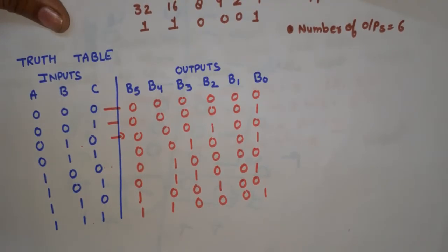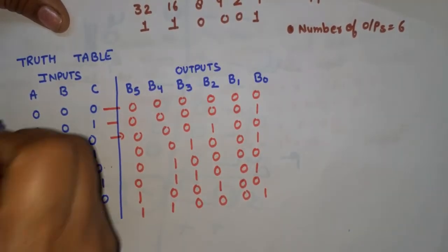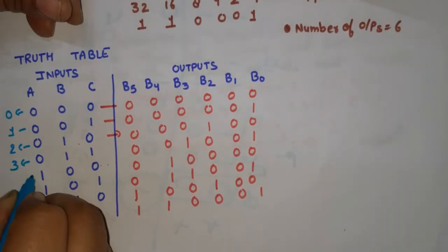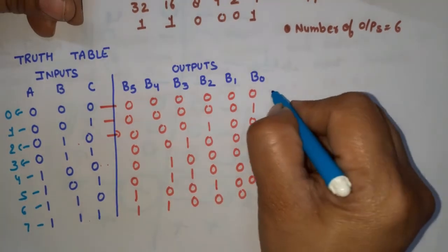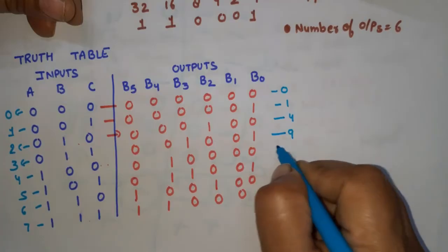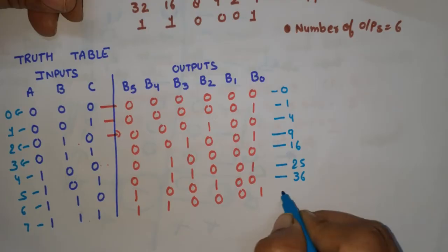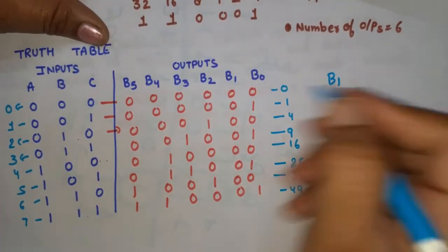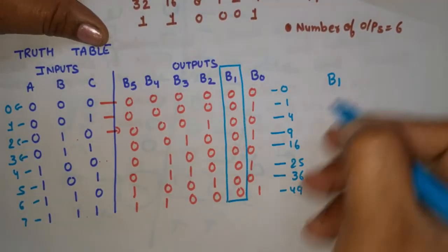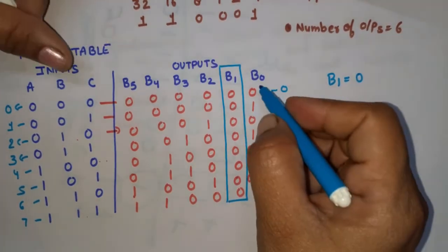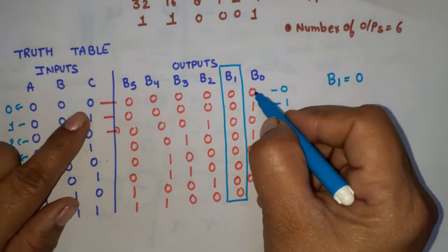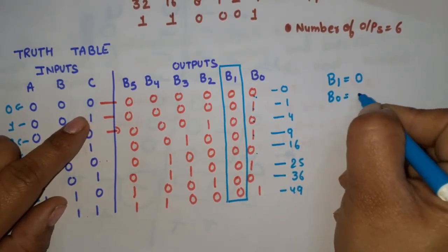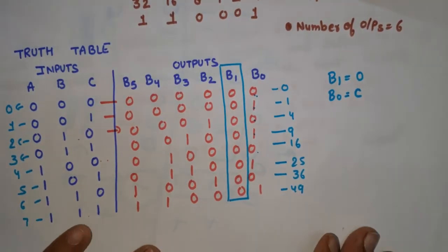Now comparing the decimal equivalents of inputs: 0, 1, 2, 3, 4, 5, 6, 7 — these correspond to squares 0, 1, 4, 9, 16, 25, 36, 49. From this you can see that b1 is always 0 throughout the table. And comparing b0 with input C: 0, 0, 1, 1, 0, 0, 1, 1 — b0 matches C exactly, so b0 equals C.